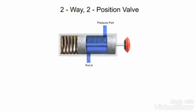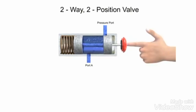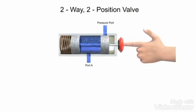This spool valve has two ports and two positions. The first position allows fluid to flow freely. The second position blocks both ports. Even though both ports aren't physically blocked, the lack of fluid entering the pressure port also prevents fluid from exiting outlet port A. Therefore, both ports are defined as blocked, making it a two-way, two-position valve.